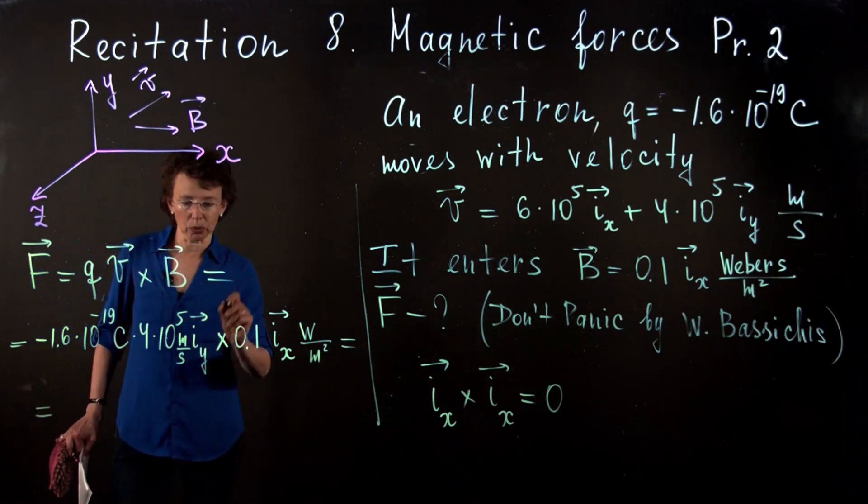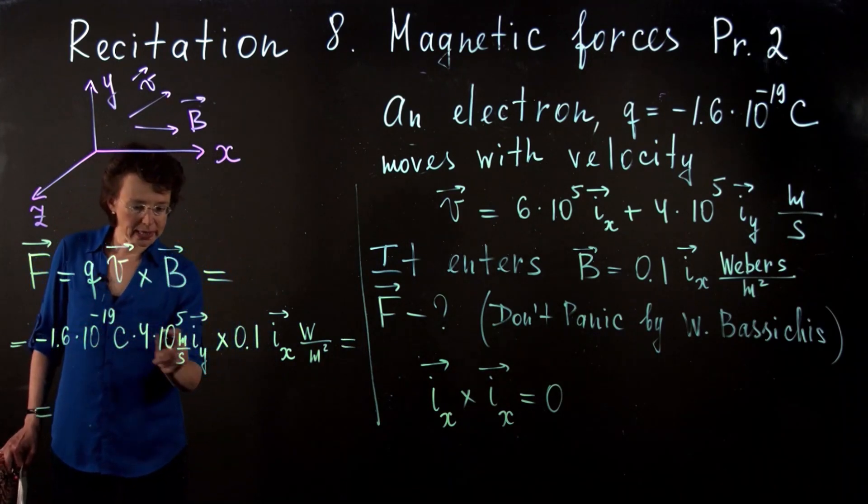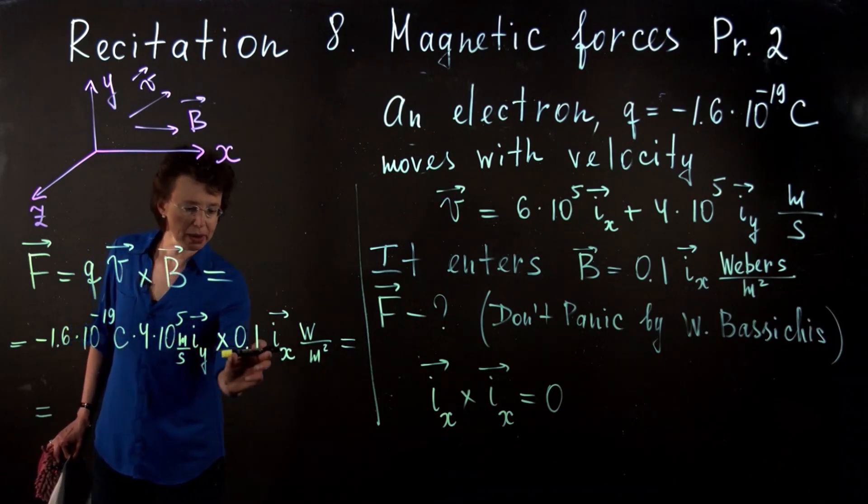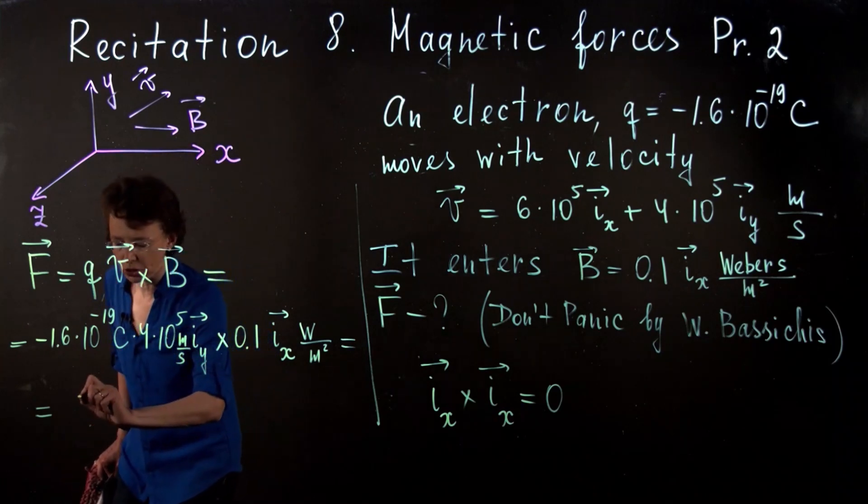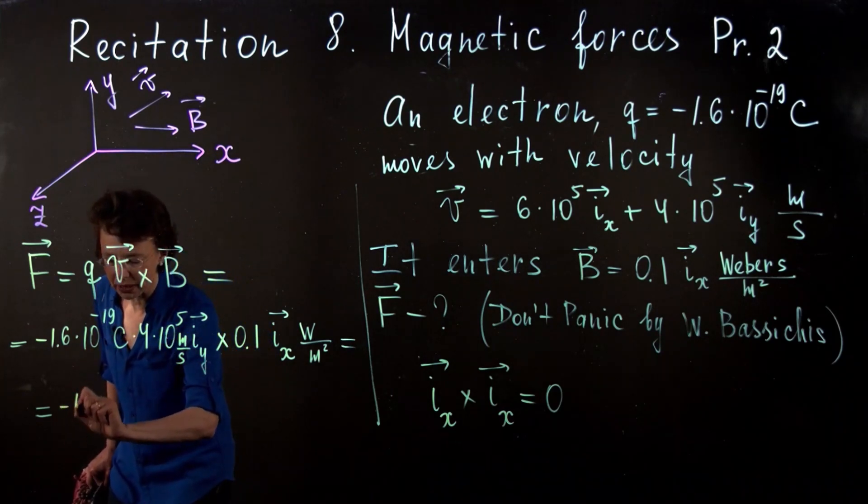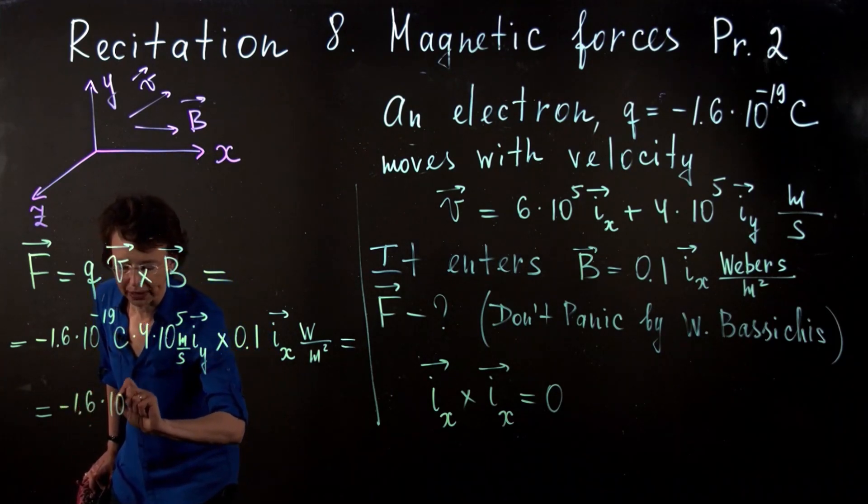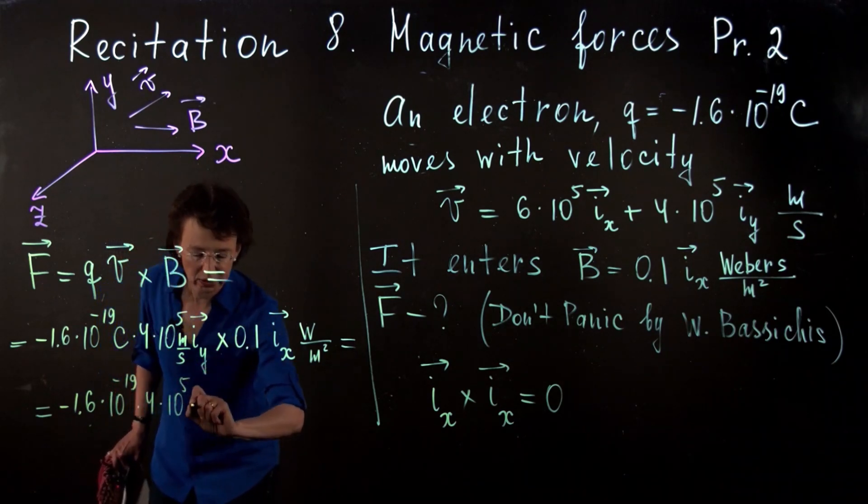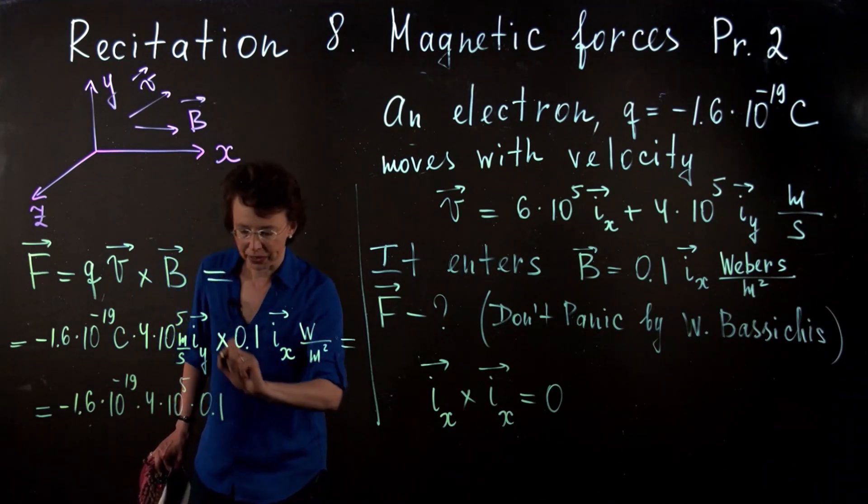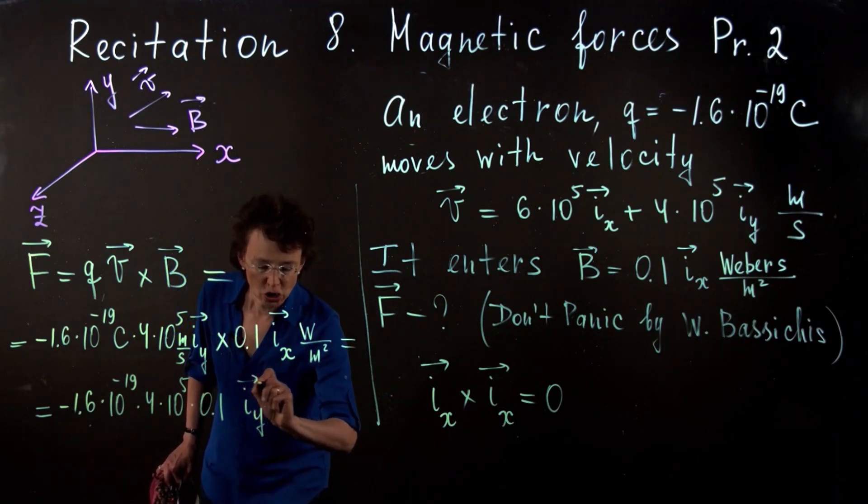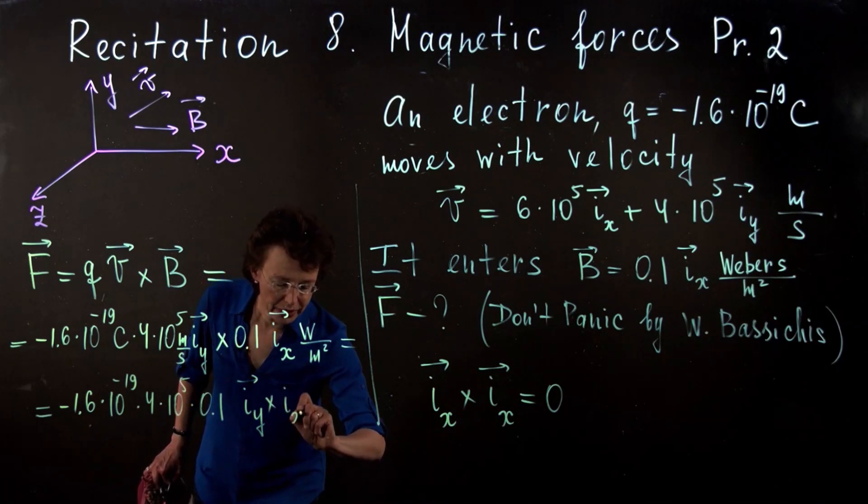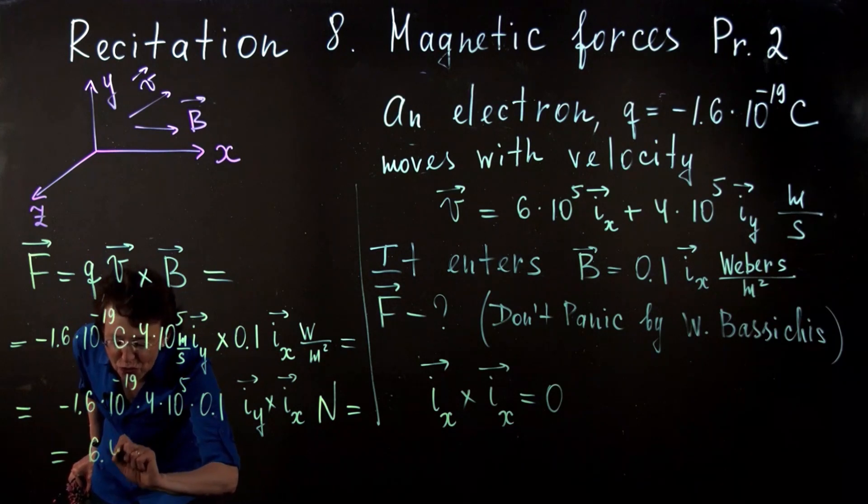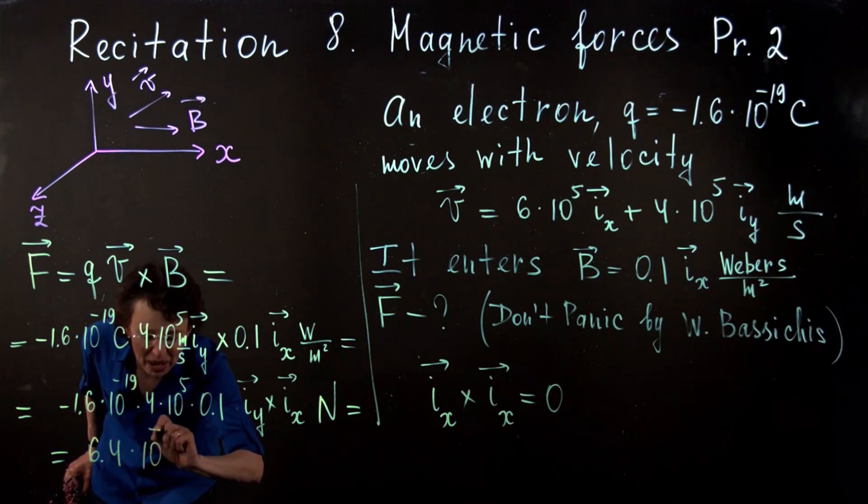This will be equal to, first let's find the magnitude. If I multiply these numbers, it will be minus 1.6 times 10 to minus 19 times 4 times 10 to the fifth times 0.1. All I have here is iy cross ix that will give me the direction. Magnitude is 6.4 times 10 to minus 15.